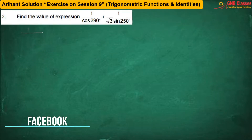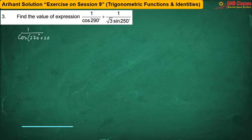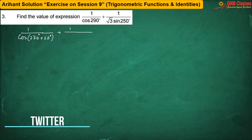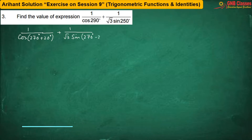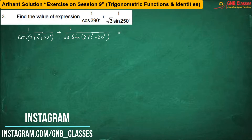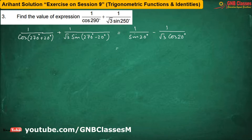Here we are having cos290°, I am writing it as 270° + 20°. Similarly, for sin250° we are writing it as sin(270° − 20°). So we are having the expression — taking LCM we get.